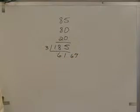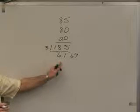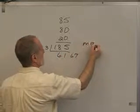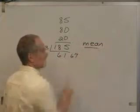A 61 average, and two-thirds. We call this kind of average the mean, the arithmetic mean.